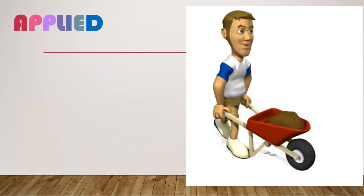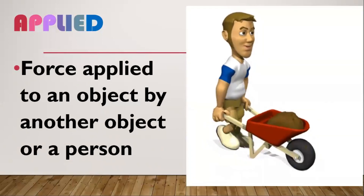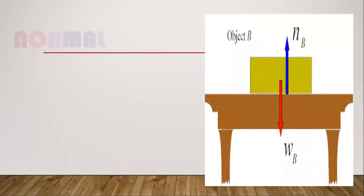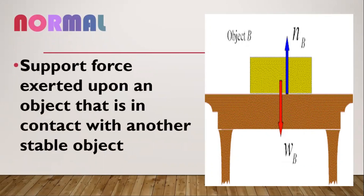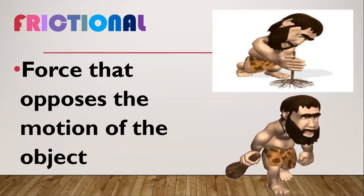Here are the different kinds of contact forces. First is applied force — the kind of force you apply to an object, whether it is a push or a pull. Second is normal force — a support force exerted upon an object that is in contact with another stable object. It acts on the surface, as seen in the picture with a box on a table, where the arrows show equal forces because the object on top is not moving.